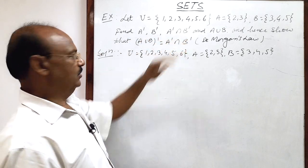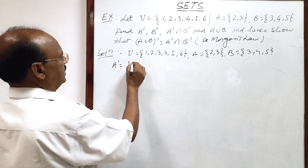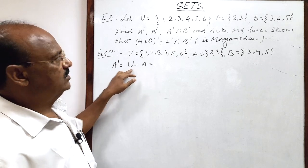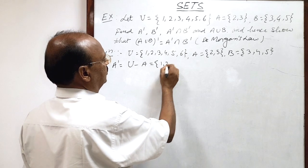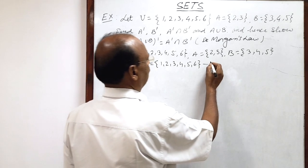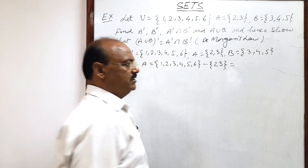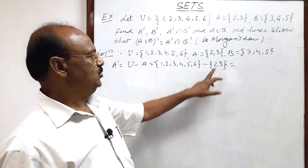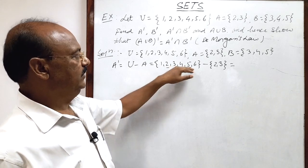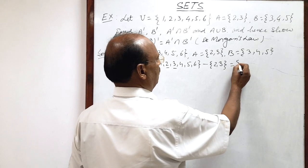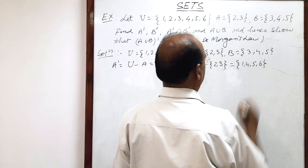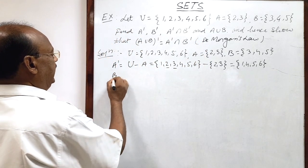A complement means universal set minus set A. The universal set is {1, 2, 3, 4, 5, 6} minus set A which is {2, 3}. We remove the elements 2 and 3 from the universal set. After removing these two elements, A complement consists of the elements {1, 4, 5, 6}.